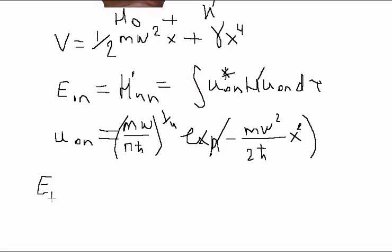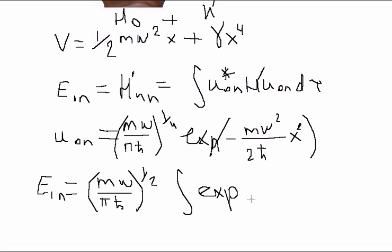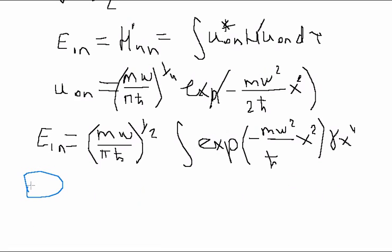First energy approximation can be written in the following form: m omega divided by π h squared to the power one half, exponent with the complex conjugation of the wave function. But in reality we don't have any complex variables here, so we can write it as only the usual function squared.